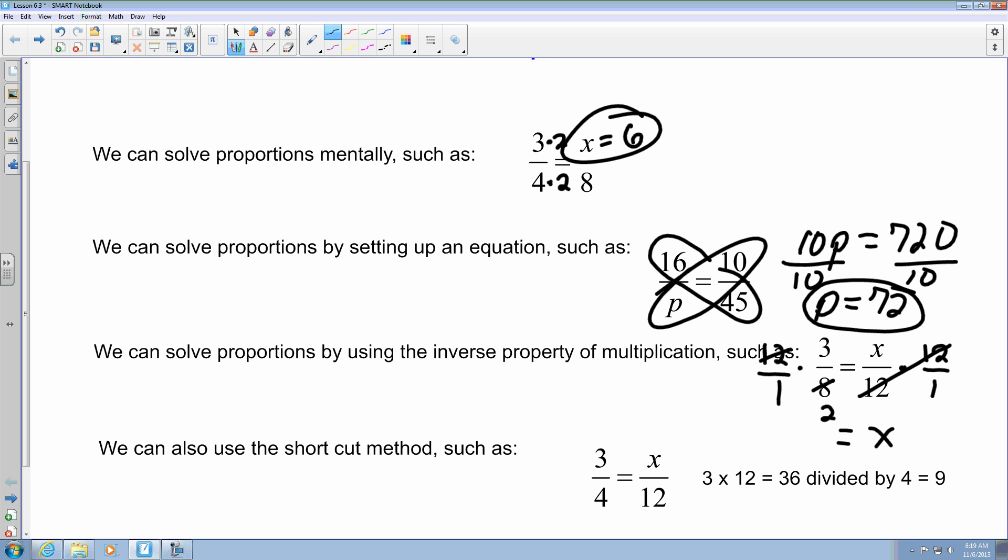And I can divide the 12 by 4, which gives me 3. And essentially, I just take 3 times 3, which gives me 9, and then 1 times 2, which gives me 2. So x, in this case, would essentially equal 9 over 2, or 4.5.